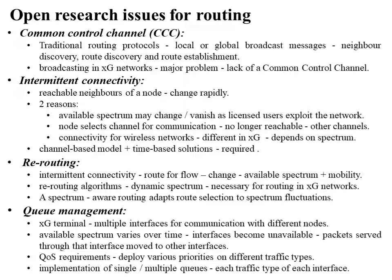Next comes intermittent connectivity. In XG networks, the reachable neighbors of a node may change rapidly for two reasons. First, the available spectrum may change or vanish as licensed users exploit the network. Moreover, once a node selects a channel for communication, it is no longer reachable through other channels. As a result, the connectivity concept used for wireless networks is different in XG networks and depends on the spectrum, requiring channel-based as well as time-based solutions.